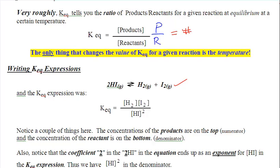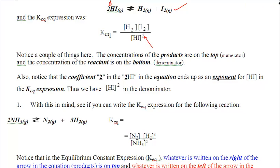Let's look at this equilibrium and go over the rules required to write out the Keq expression. Rule number one: it's products over reactants — H₂ and I₂ over HI. Rule number two: that coefficient is an exponent. So we've got products over reactants, coefficients are exponents — those are the two general rules. For this equilibrium, we get N₂H₂³ over NH₃² — products over reactants, coefficients are exponents.